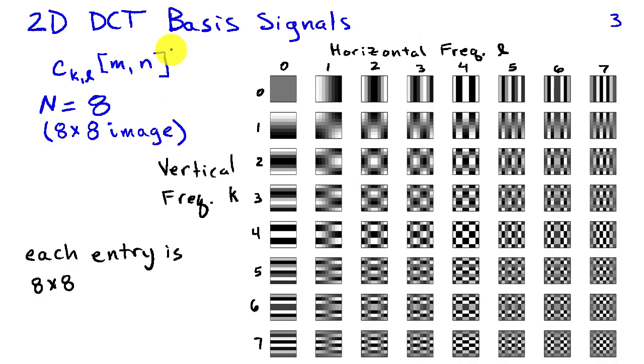In this slide, we're showing those basis signals for the indices k and l. So k equals 0, k equals 1, k equals 2, and so on. And then this represents l equals 0, l equals 1, l equals 2. And each of these images is an 8 by 8 image representing c of k comma l of m comma n.